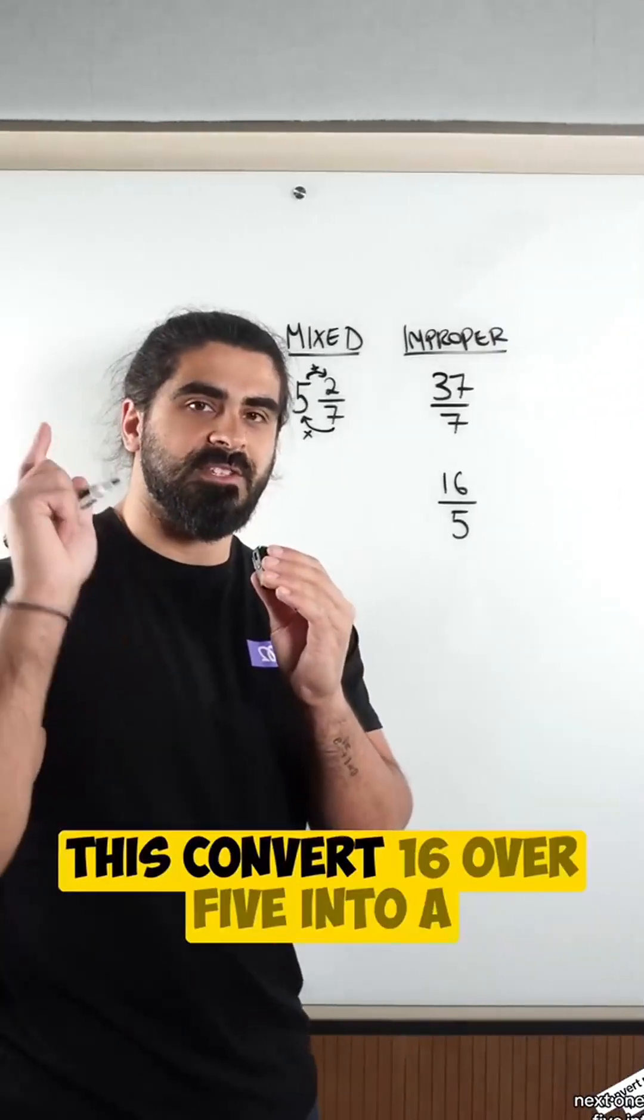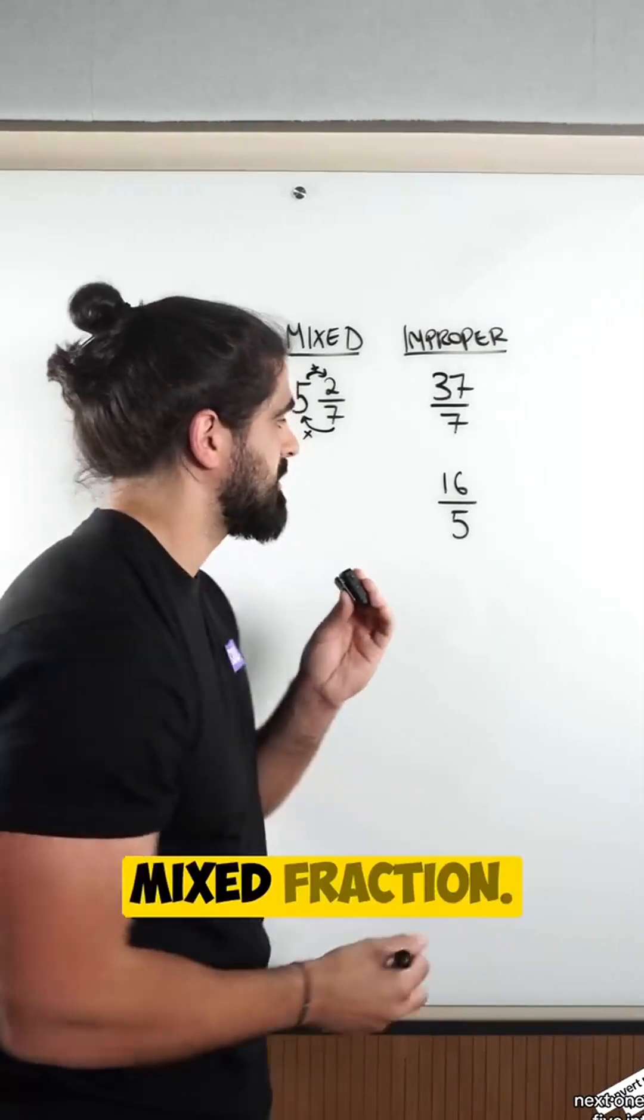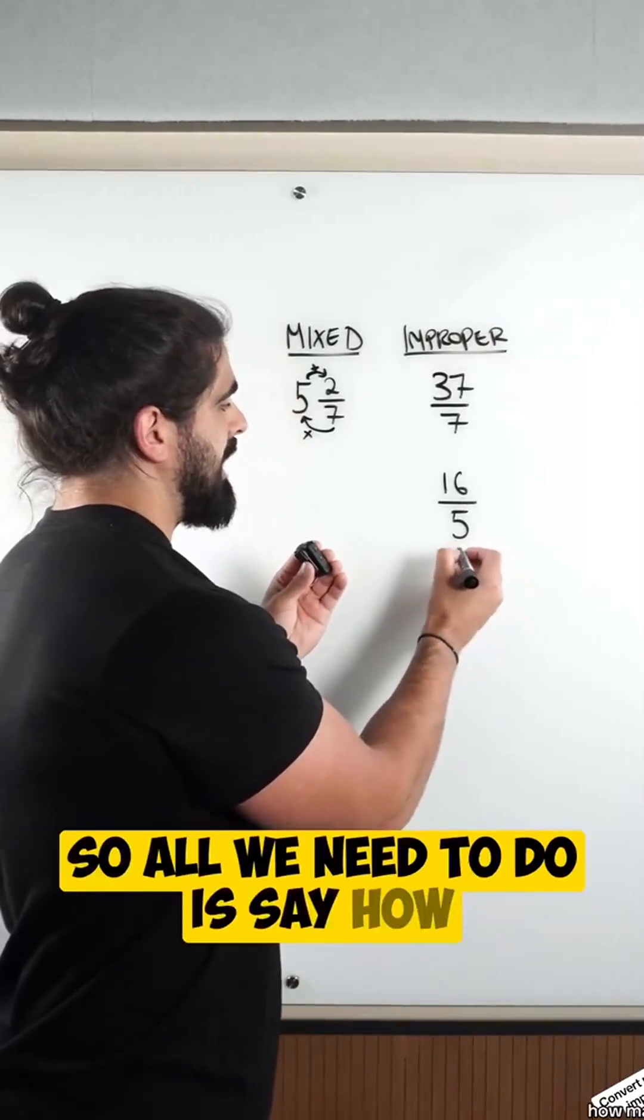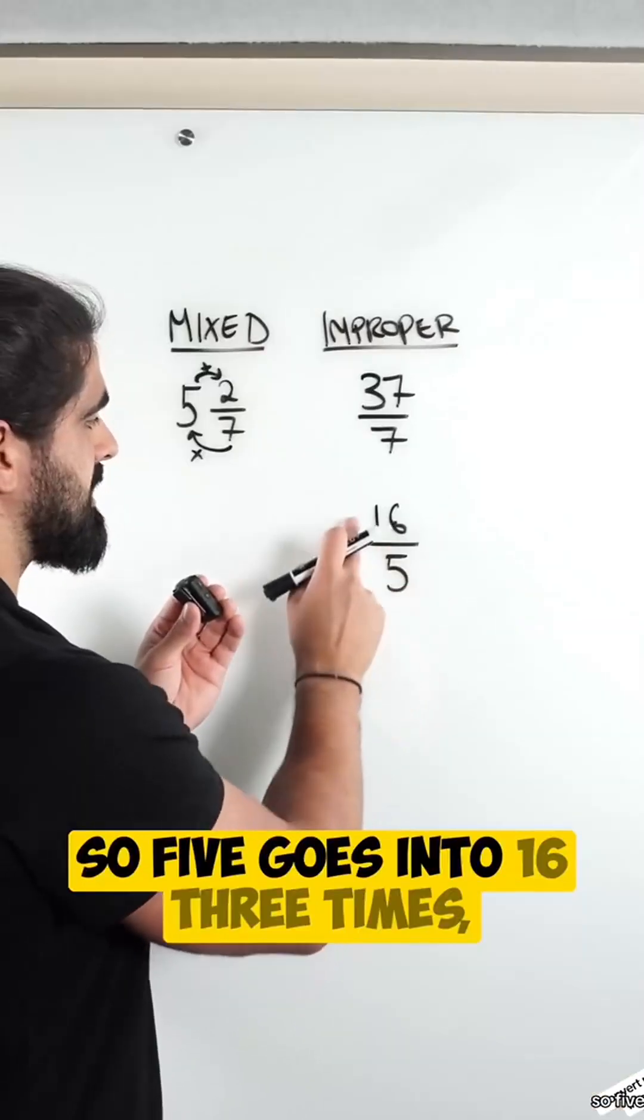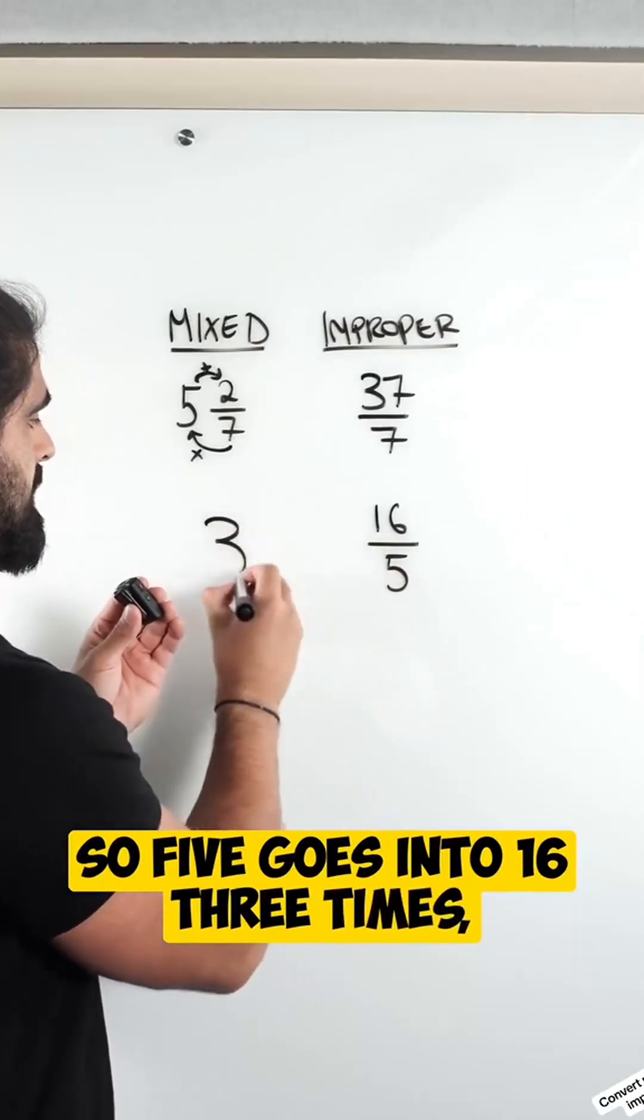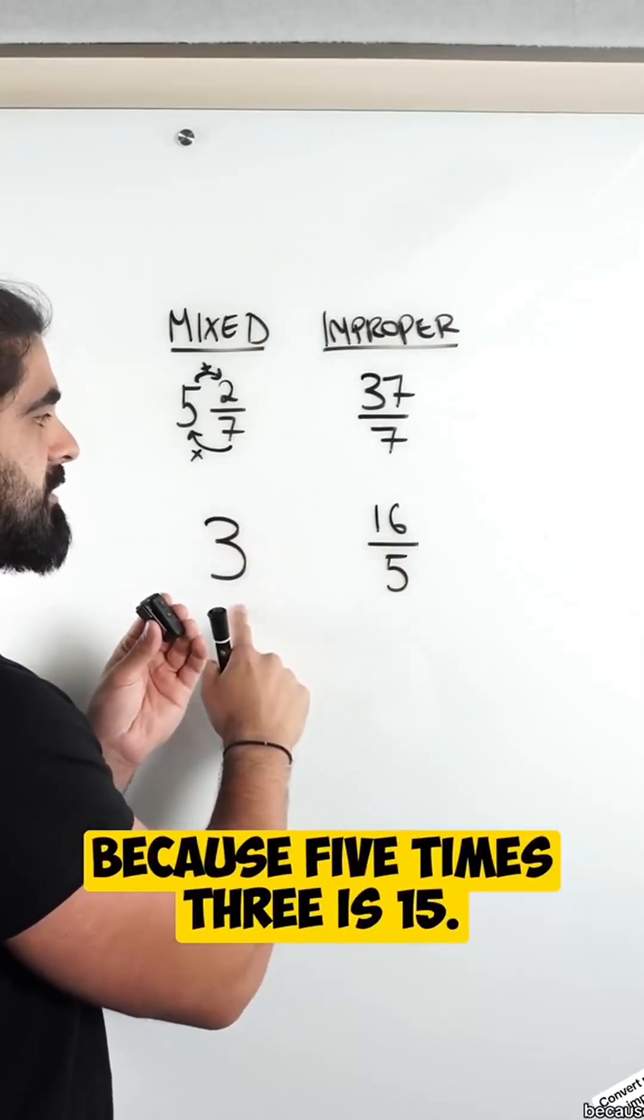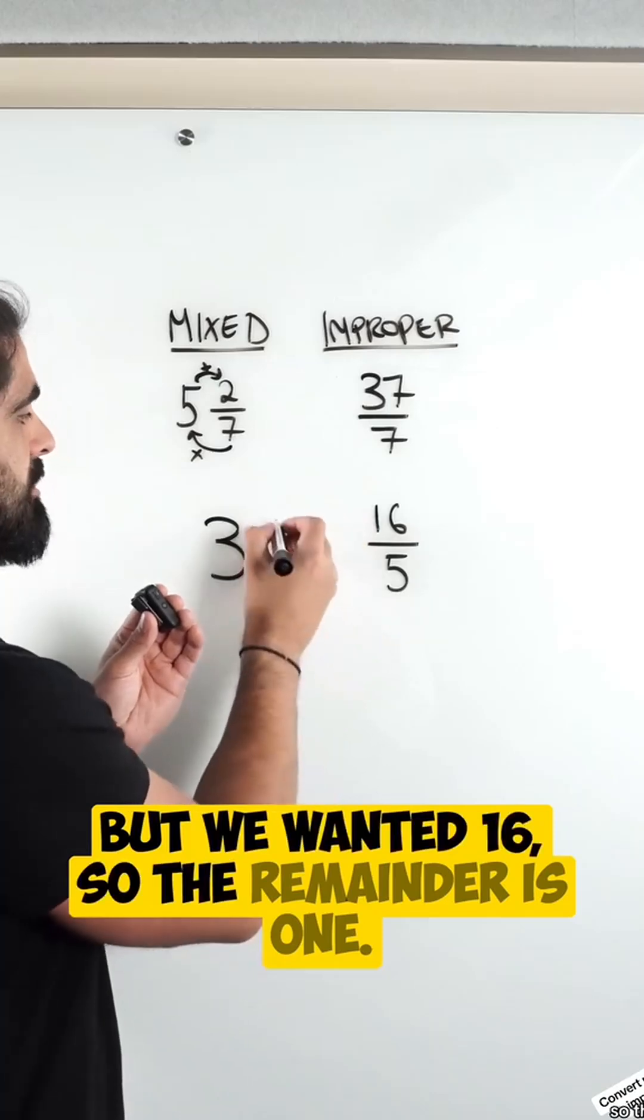Next one, let's convert 16 over 5 into a mixed fraction. So all we need to do is say how many 5s go into 16. So 5 goes into 16 three times, because 5 times 3 is 15. But we wanted 16, so the remainder is 1.